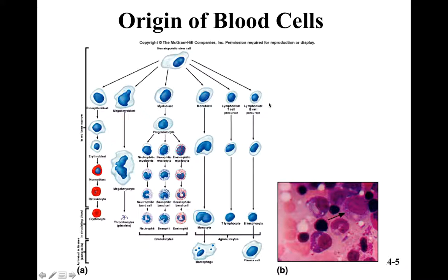All blood cells come from this thing called the hematopoietic stem cell. This is the stem cell for all blood cells, found in the bone marrow. These hematopoietic stem cells are the progenitor cells for all blood cells. The pro-erythroblast becomes the erythrocyte, and the erythrocytes are what's actually found inside our blood, but all of their precursors are forming in the bone marrow.